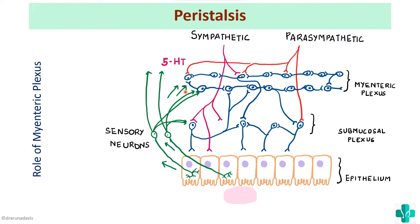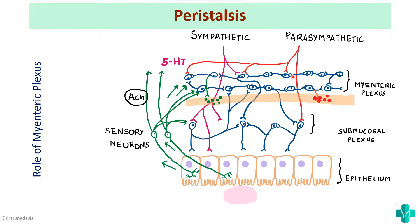There are two types of myenteric neurons: anterograde and retrograde. The anterograde neurons release acetylcholine, which causes constriction of the circular muscle layer just before the bolus. On the retrograde end, the neurotransmitter nitric oxide is released, causing relaxation of the segment just after the bolus. This is how the contractile ring is formed before the bolus and relaxation occurs after it — that is the role of the myenteric plexus in peristalsis.